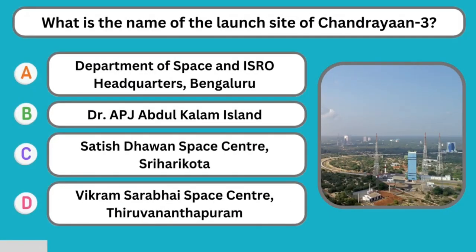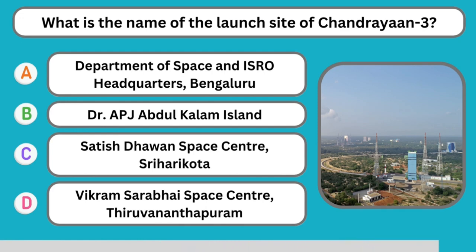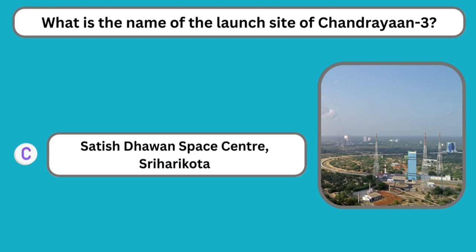Question number four: What is the name of the launch site of Chandrayaan 3? The correct answer is Satish Dhawan Space Center, Sriharikota.